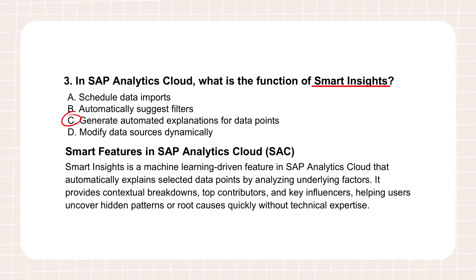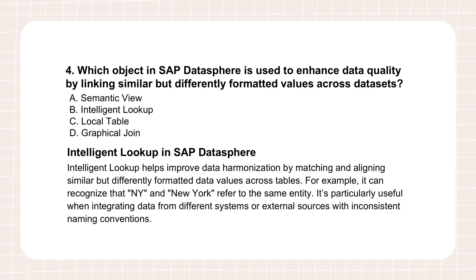Data is often messy — one system says NY, another says New York, another has N.Y. DataSphere addresses this with intelligent lookup, whose purpose is to improve data quality by linking similar but differently formatted values across your data sets. It uses machine learning or similarity rules, sometimes called fuzzy matching, to figure out that NY and New York likely refer to the same thing, and then helps you standardize them. This drastically improves data consistency, which is fundamental if you want reliable, meaningful analysis. Garbage in, garbage out still applies.